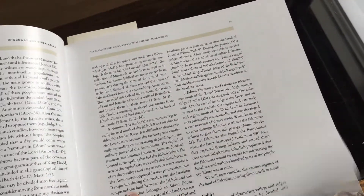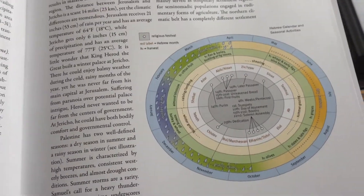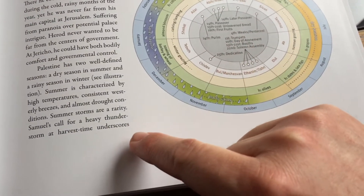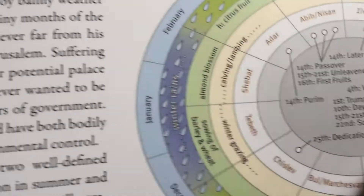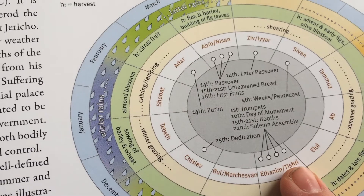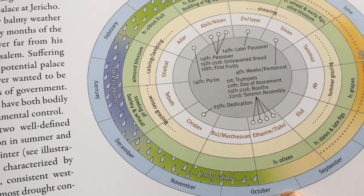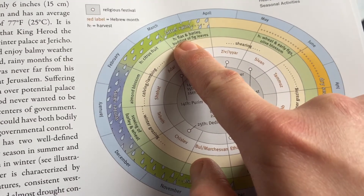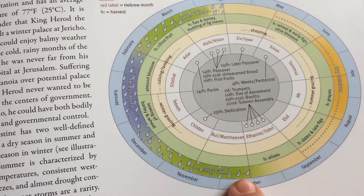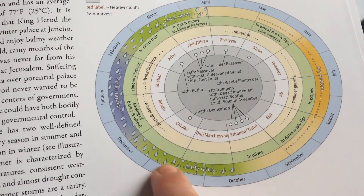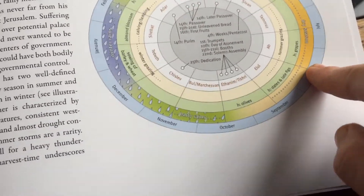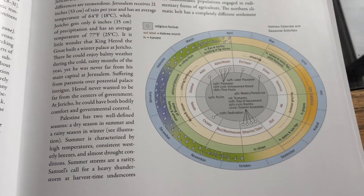This atlas also has cool things like the Jewish calendar, so you can see where all the different festivals and feasts are. It shows the months and what month they correspond to on our calendar, when they're harvesting olives, flax, and barley, and what the seasons are. They don't really have spring and summer — instead they have early rains, winter rains, latter rains, and a dry season.